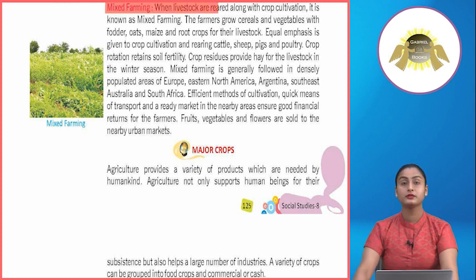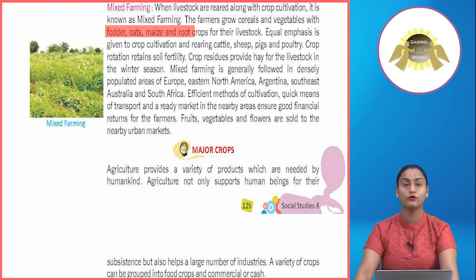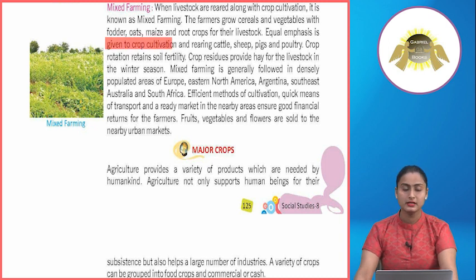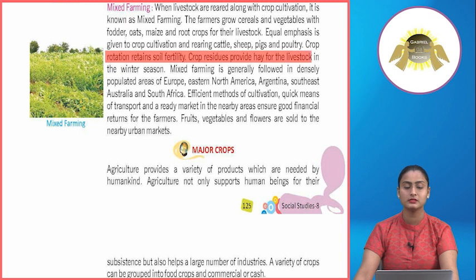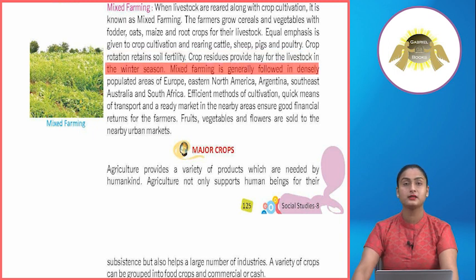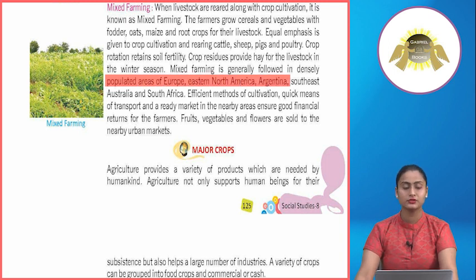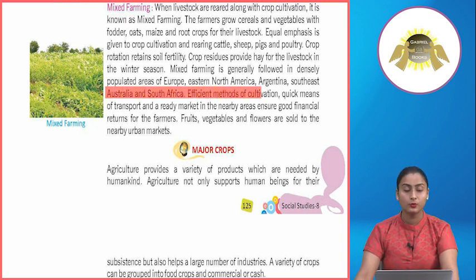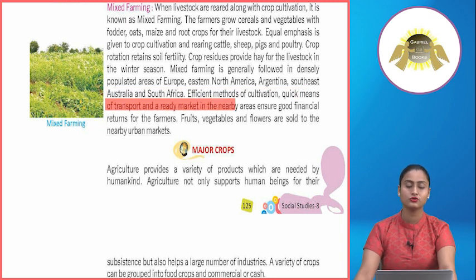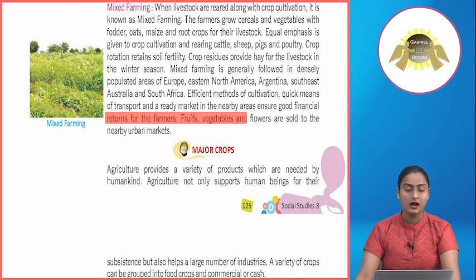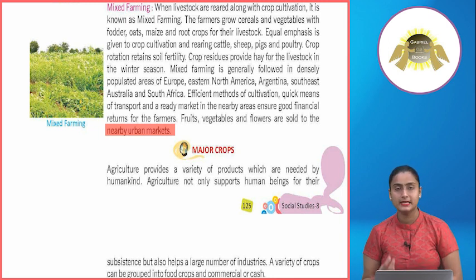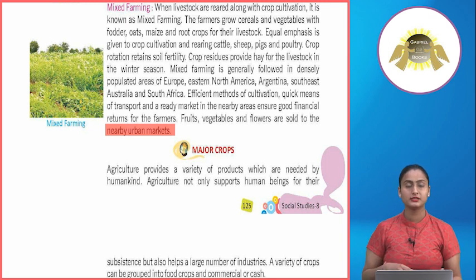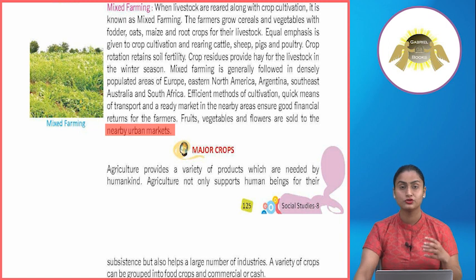Mixed farming: When livestock are reared along with crop cultivation, it is known as mixed farming. The farmers grow cereals and vegetables with fodder crops — oats, maize and root crops — for their livestock. Equal emphasis is given to crop cultivation and rearing of cattle, sheep, pigs and poultry. Crop rotation retains soil fertility, and crop residues provide hay for livestock in winter. Mixed farming is generally followed in densely populated areas of Europe, eastern North America, Argentina, southeast Australia and South Africa. Efficient cultivation methods, quick transport and a ready nearby market ensure good financial returns.